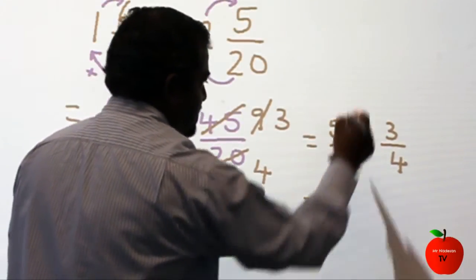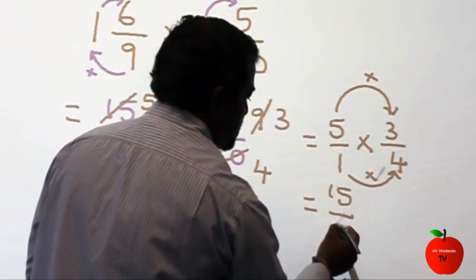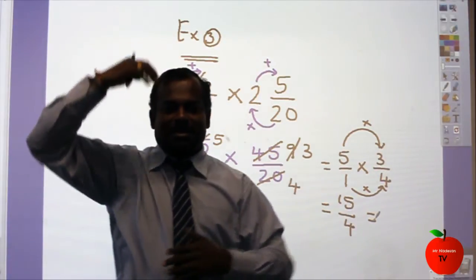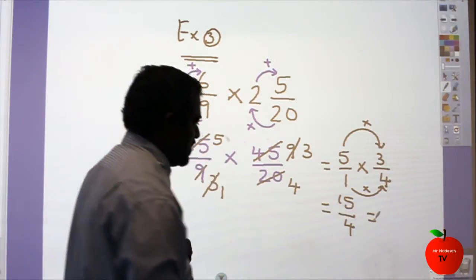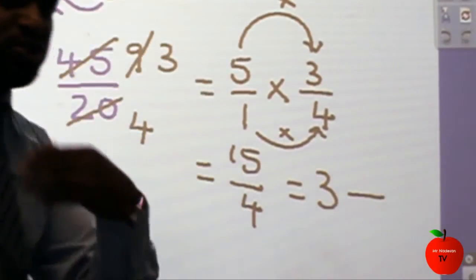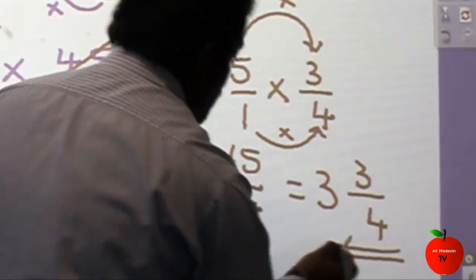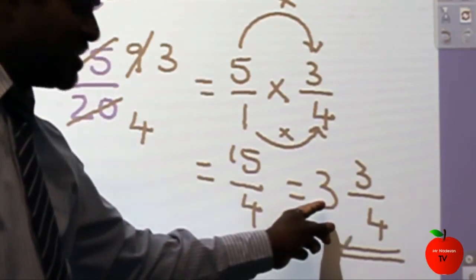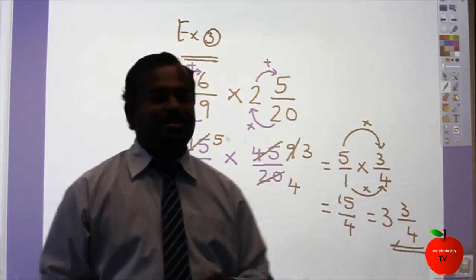Now multiply: 5 times 3 comes to 15, and 1 times 4 comes to 4. So 15 over 4 is a heavy number — something heavy on top — so you have to convert to a mixed number. How many 4s in 15? 3. Then 3 times 4 is 12. 15 take away 12 is 3, remainder. Over 4. Make sure you double check your answer: 4 times 3 is 12. So the answer is 3 and 3 over 4.